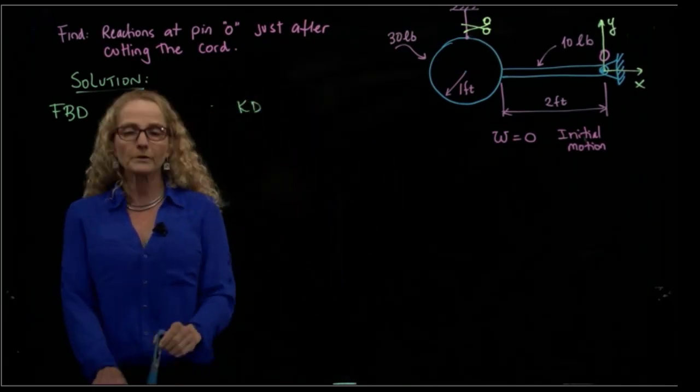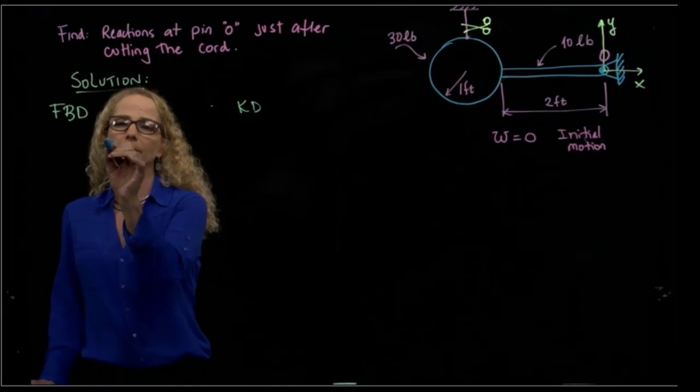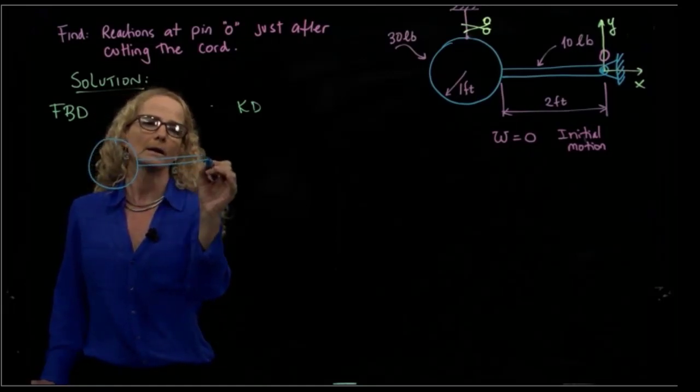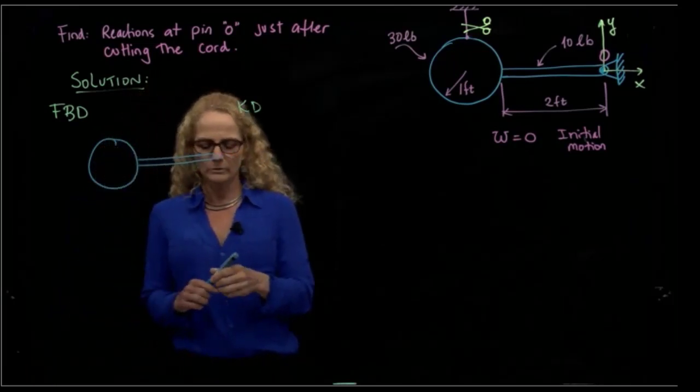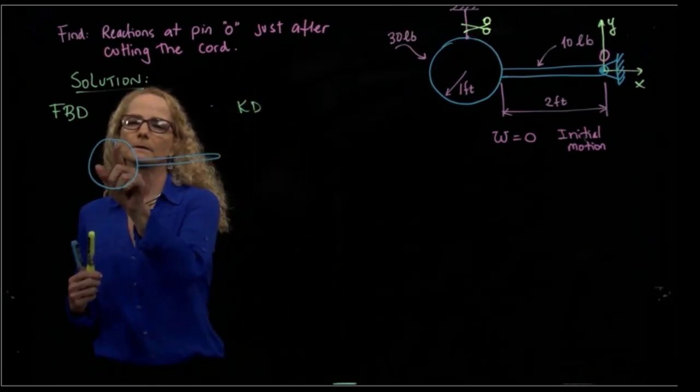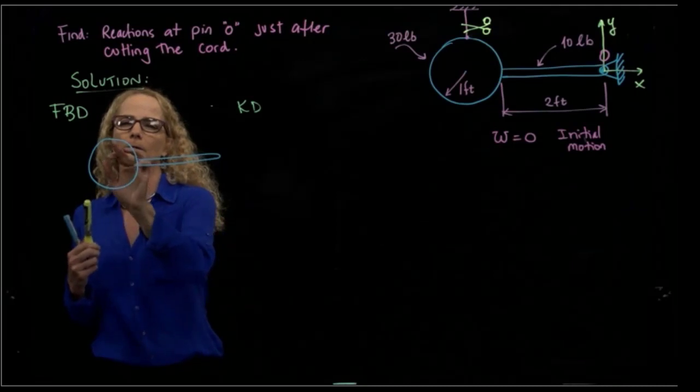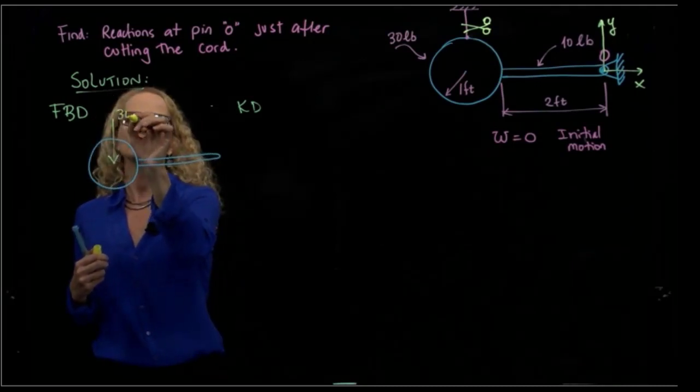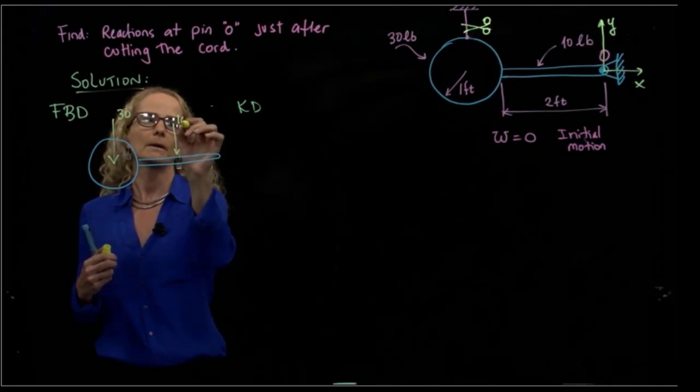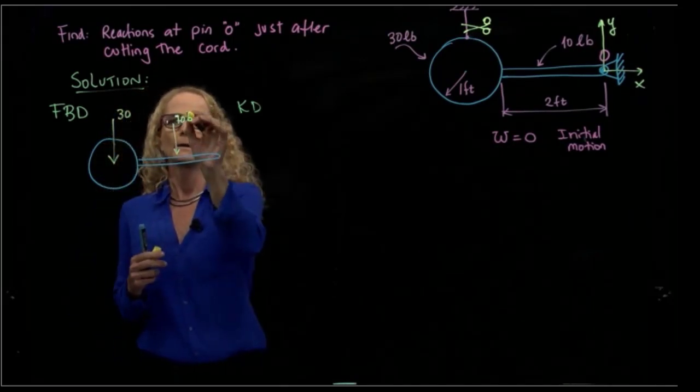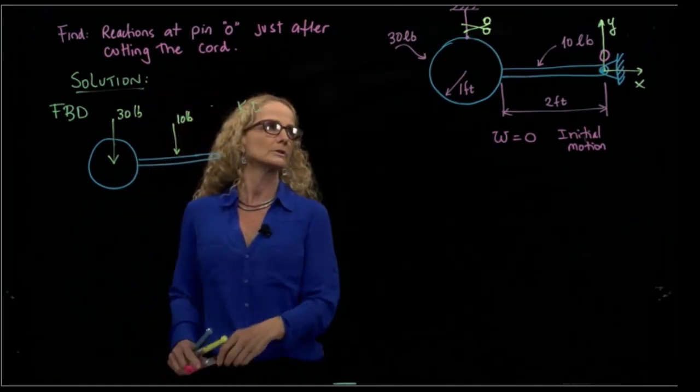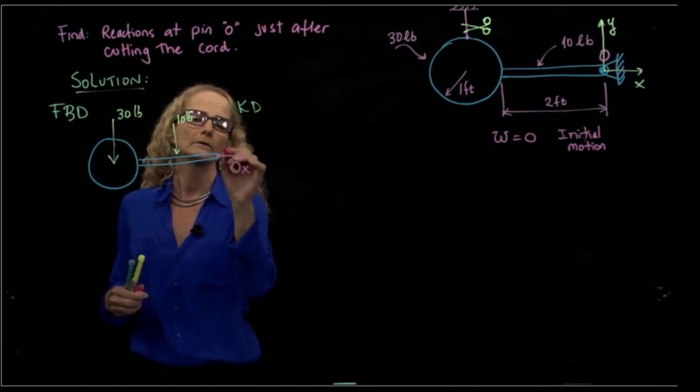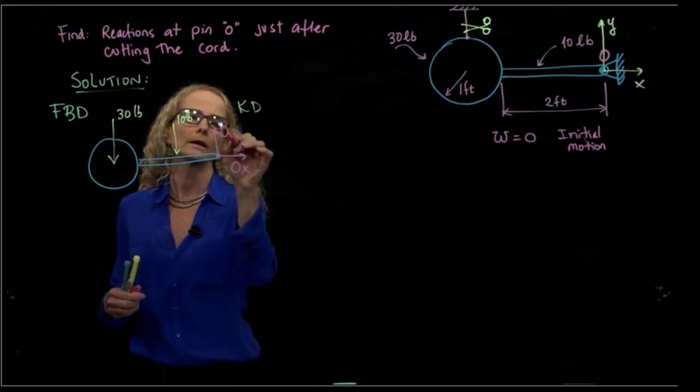For our free body diagram, we have our sphere and our slender rod. We have the weights: this is 30 pounds and this is 10 pounds. Then we have our reactions at O. Using my coordinate system, this is O, X, and Y.